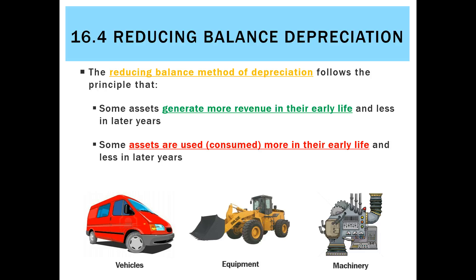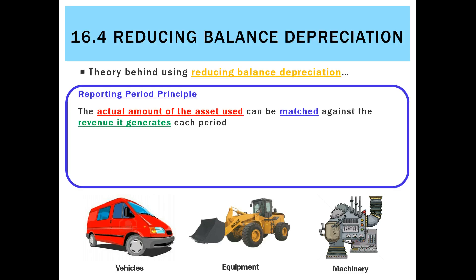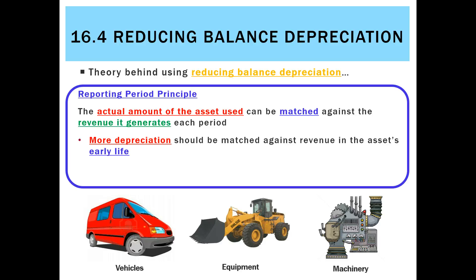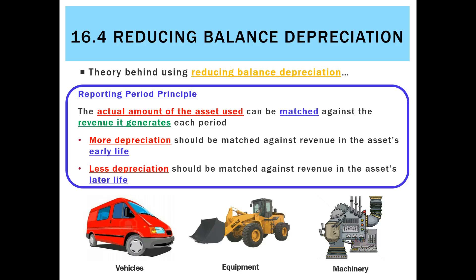Examples of these assets include vehicles, equipment, and machinery. The theory behind using reducing balance depreciation comes down to the reporting period principle, where we need to match revenues and expenses each period. If the asset is going to be used more in its early life, we should charge more depreciation, and therefore match that with more revenue at the beginning. Then we'll charge less depreciation, which will be matched against less revenue in the asset's later life.